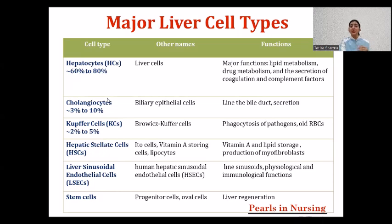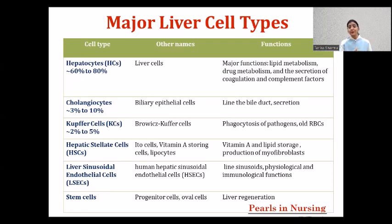Cholangiocytes occupy 3 to 10% of liver cells and line the bile duct to secrete bile. Kupffer cells, also known as Browicz-Kupffer cells, have a primary role in immunity — they perform phagocytosis of pathogens and old red blood cells, working as part of the immune response. Hepatic stellate cells store lipids and vitamin A, and they produce myofibroblasts.